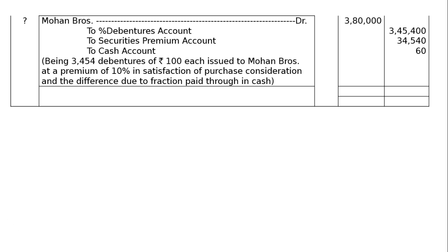Narration: being 3,454 debentures of Rs. 100 each issued to Mohan Brothers at a premium of 10% in satisfaction of the purchase consideration, and the difference due to fraction paid in cash. The totals for both the debit and credit columns amount to Rs. 8,10,000. This is the final answer.